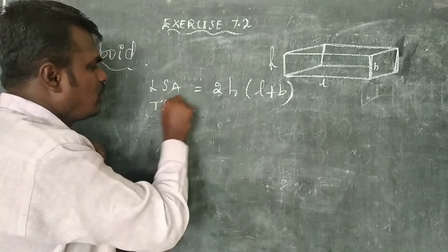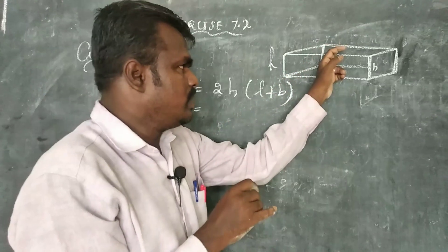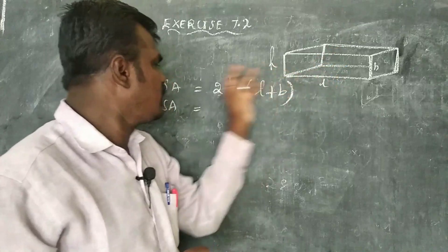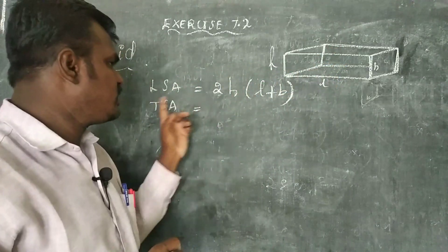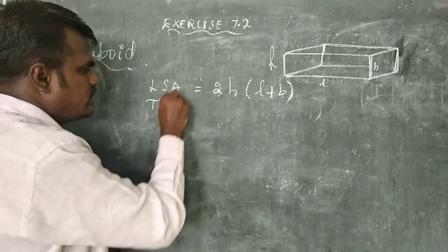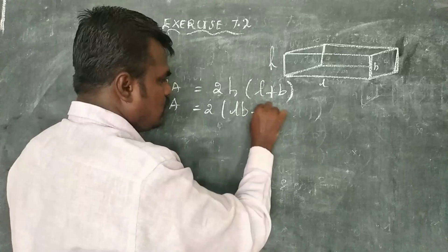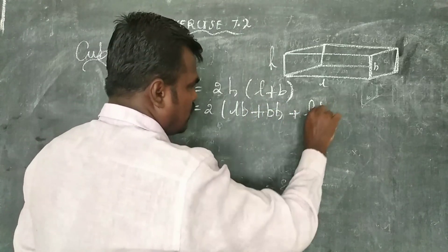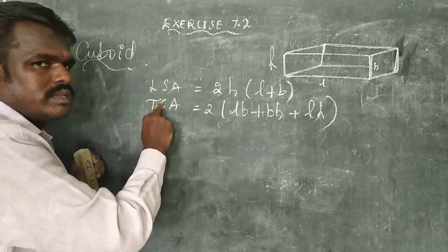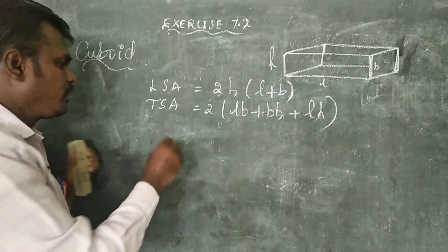TSA — total surface area. Total surface area equals base area plus lateral surface area.